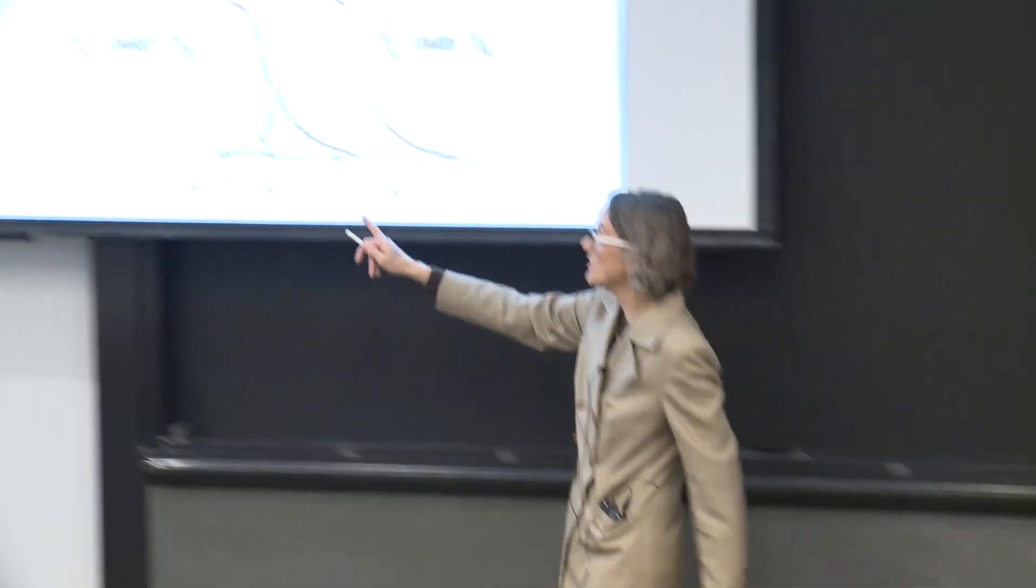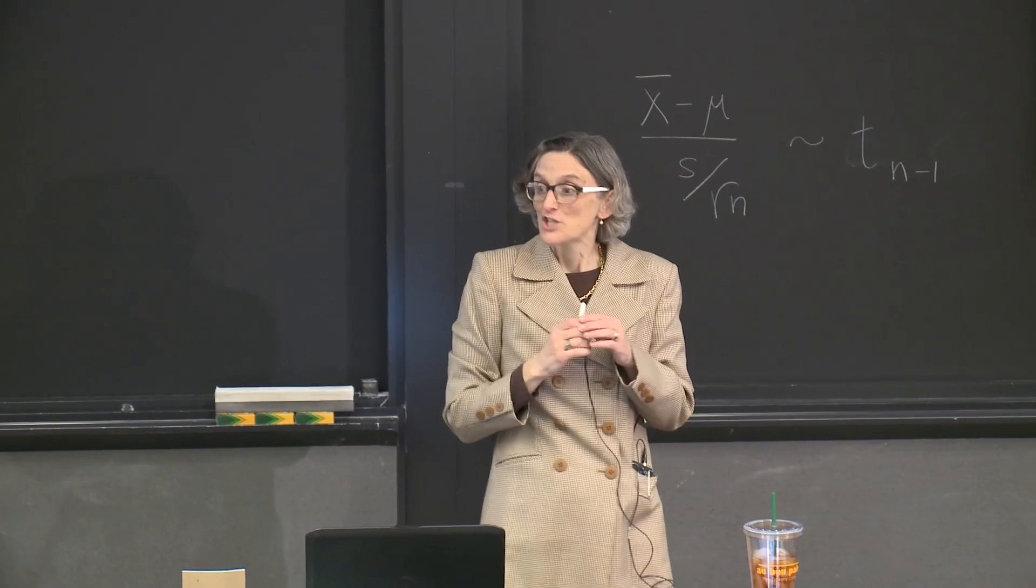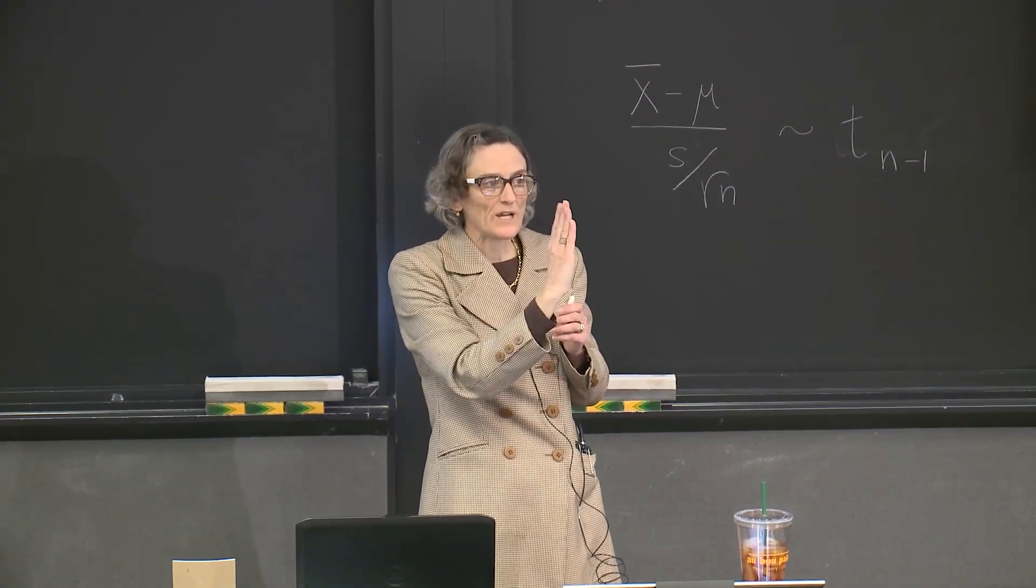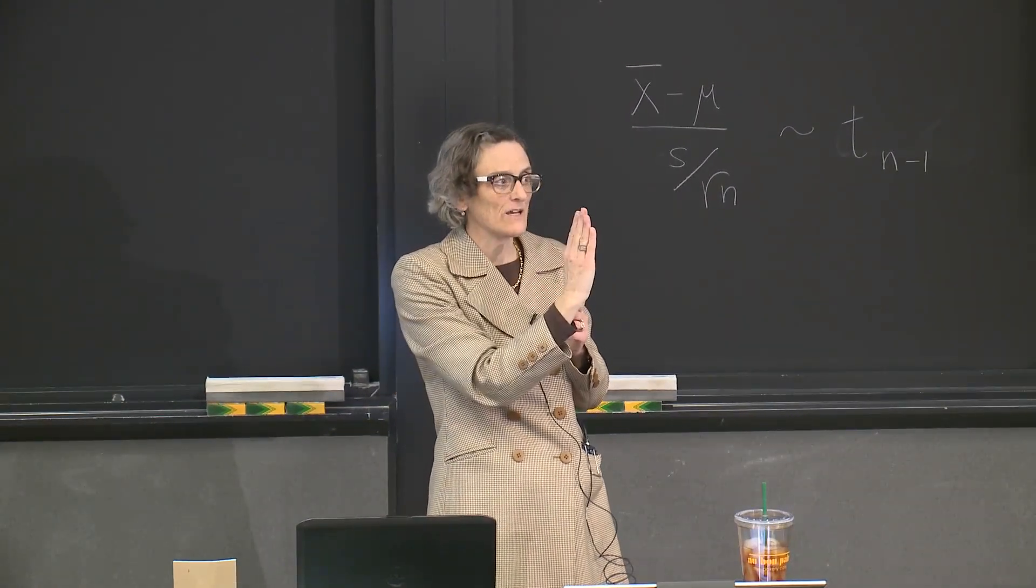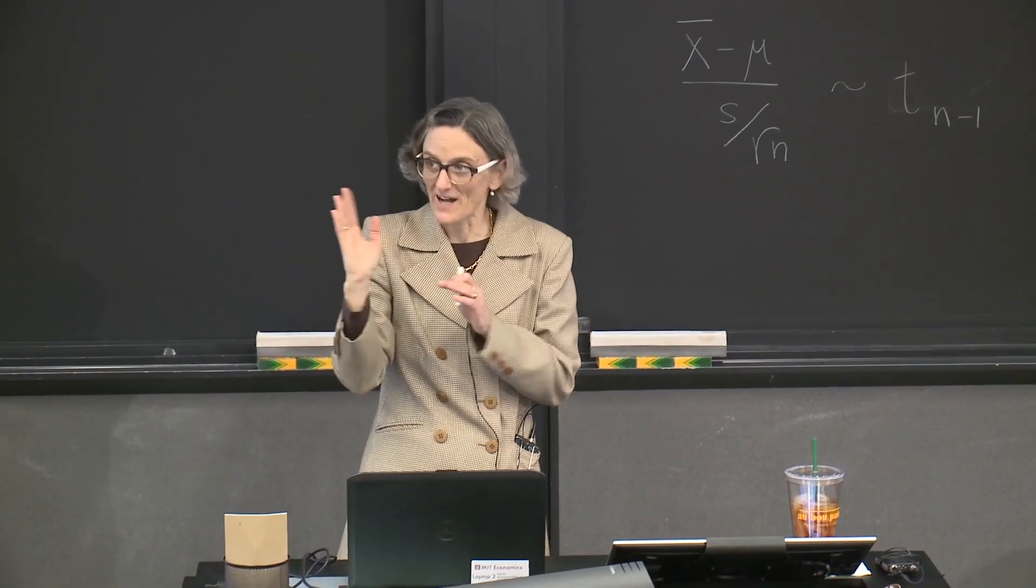So what's the probability that we reject a true null? Well, the true null means that our test statistic is distributed this way. And we reject, the critical region means that the shape of the critical region is we reject the null for large values of X bar. So anything above K, this is going to be the probability that we're rejecting a true null. So you can see, then, what we do is as we move K, we increase beta and decrease alpha or vice versa.